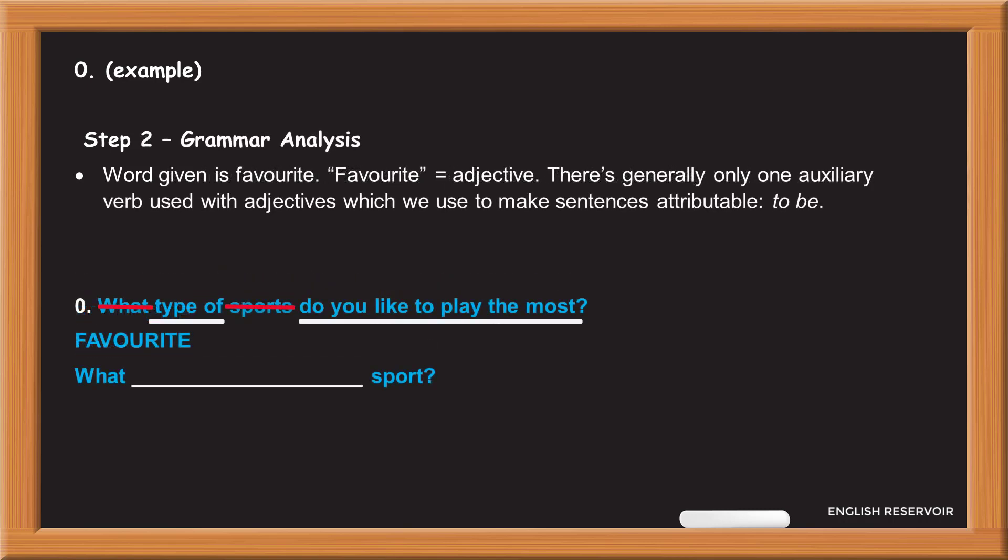Step 2. Grammatical analysis. Word given is favorite. Favorite equals adjective. There is generally only one auxiliary verb used with adjectives which we use to make sentences attributable: to be.